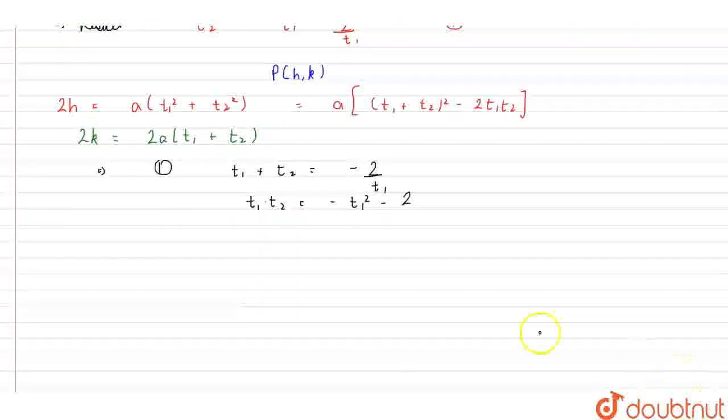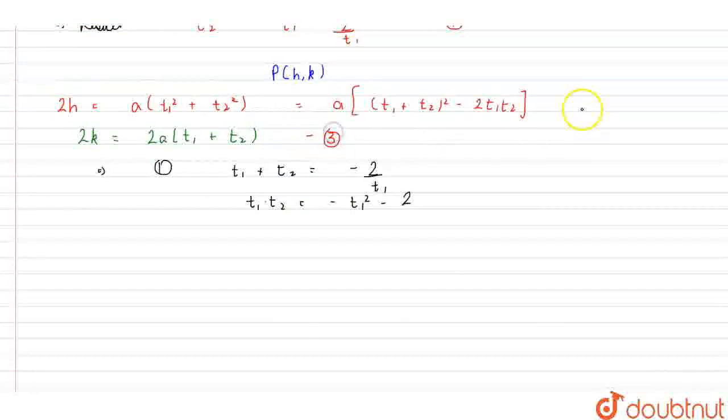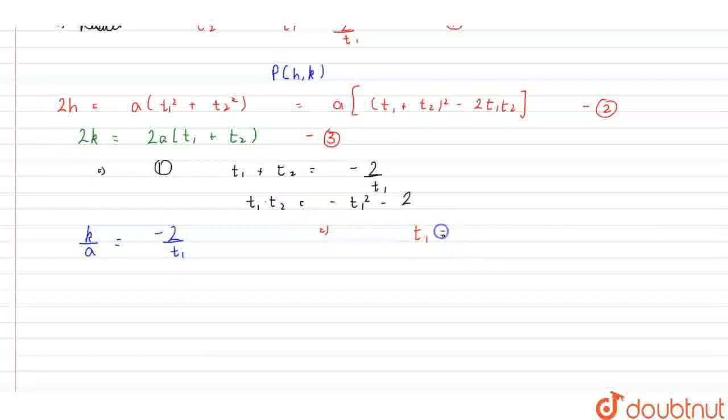Using this in the third equation, we get k upon a equals to minus 2 upon t1. Therefore, the value of t1 is equal to minus 2a upon k.